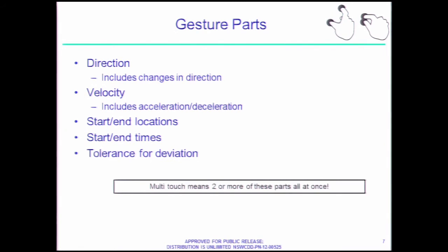Let's talk about what makes a gesture. There are a lot of different variables involved. There's direction, which includes changes in direction — if you go in one direction that's simple, but a complex path involves a whole bunch of directions. There's also velocity. As we all know, this is a drag, and this is a flick — what's the difference? You accelerated and came to a sudden deceleration. That is the only difference between a drag and a flick. Velocity is important.